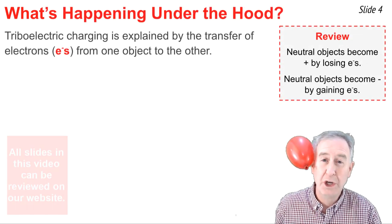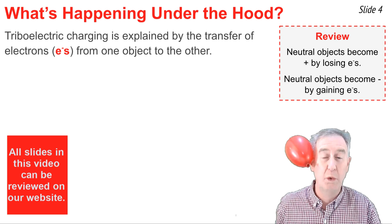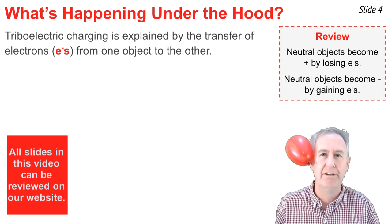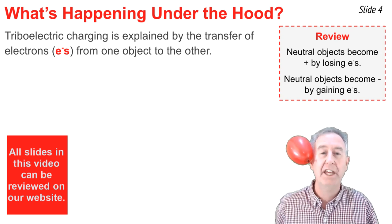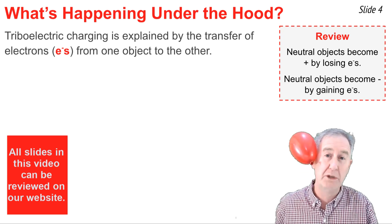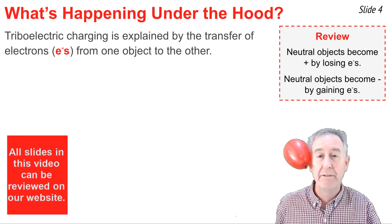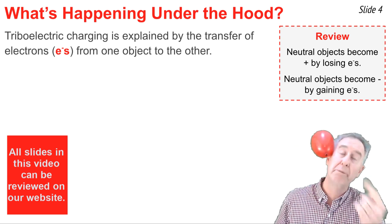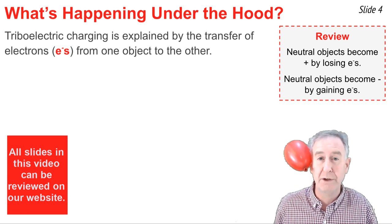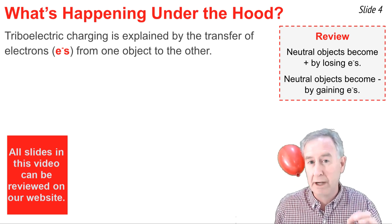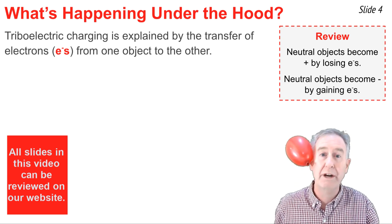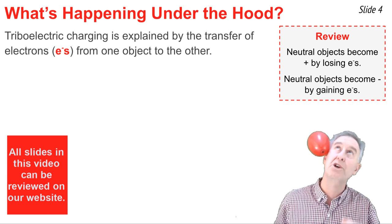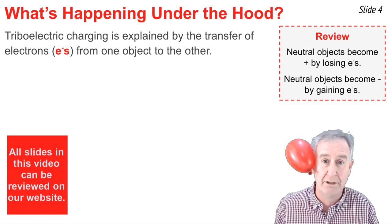When it comes to charging processes, we always want to know what's going on under the hood, so to speak, at the particle level. In the case of triboelectric charging, we explain it by the transfer of electrons from one object to another object. We've already learned from a previous video that neutral objects become charged positively whenever they lose electrons, and neutral objects become charged negatively whenever they gain electrons.